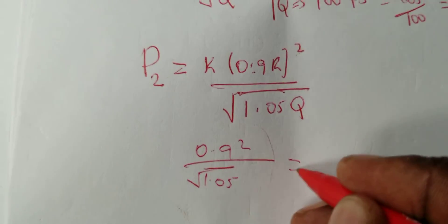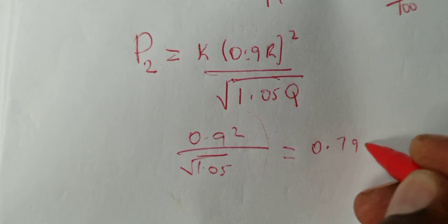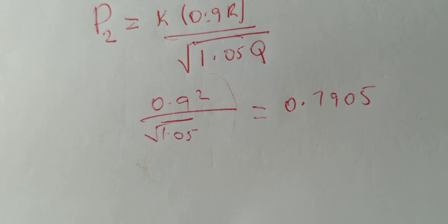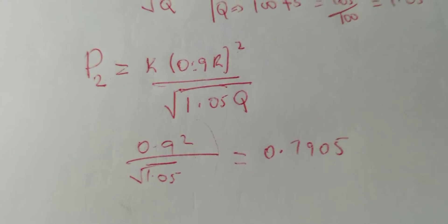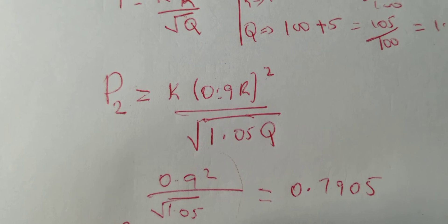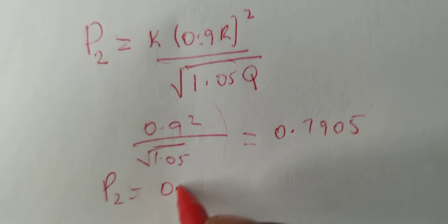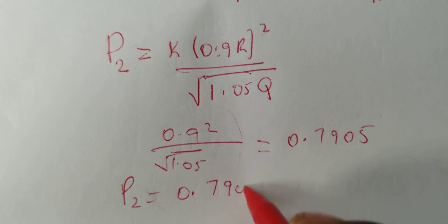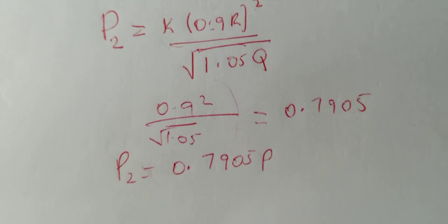And when you work that out, you will get 0.7905. This tells you that our new P, P2, is 0.7905 of the original P.